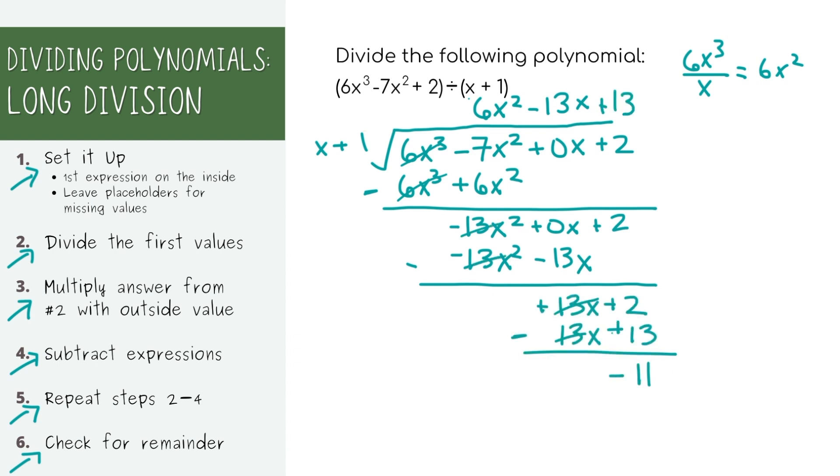Now let's multiply it out with the terms on the outside and subtract the expressions. Eventually we'll end up with negative 11 at the end. And there's nothing we can multiply x with to get negative 11. Unless you want to get into negative fractions, which we don't want to do. So this means that this expression up top is our answer. And this number that we're left with is our remainder. We'll format the remainder by putting the number that's left over as the numerator of a fraction. And this outside expression in the denominator. This is our final answer.